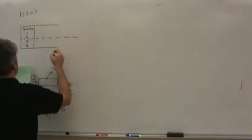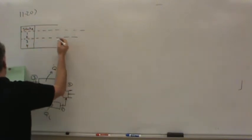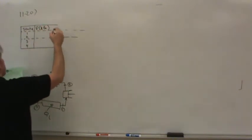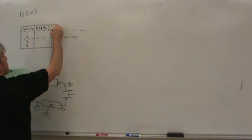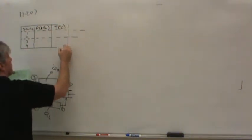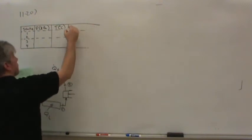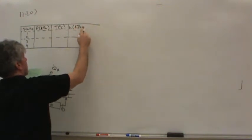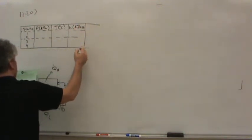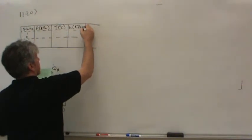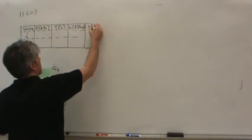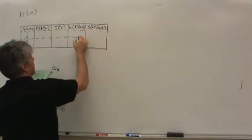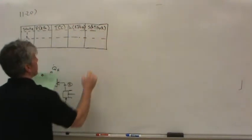What I like to do in cycle problems is make a table. You can do this in Excel or on paper. I'll note what the various states are — one, two, three, and four — with a line to keep everything straight. The variables of interest include pressure, temperature in degrees Celsius, enthalpy in kilojoules per kilogram, and entropy in kilojoules per kilogram per Kelvin. I can expand this table later if needed.